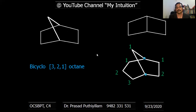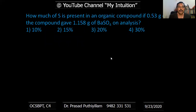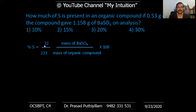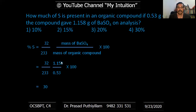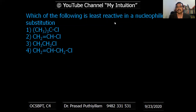Moving to the next question: how much sulfur is present in an organic compound if 0.53 grams of the compound gave 1.158 grams of barium sulfate on analysis? The formula is: percentage of sulfur equals (32/233) × (mass of BaSO₄ / mass of organic compound) × 100. Substituting the values and calculating gives 30%. The correct answer is option four: 30%.